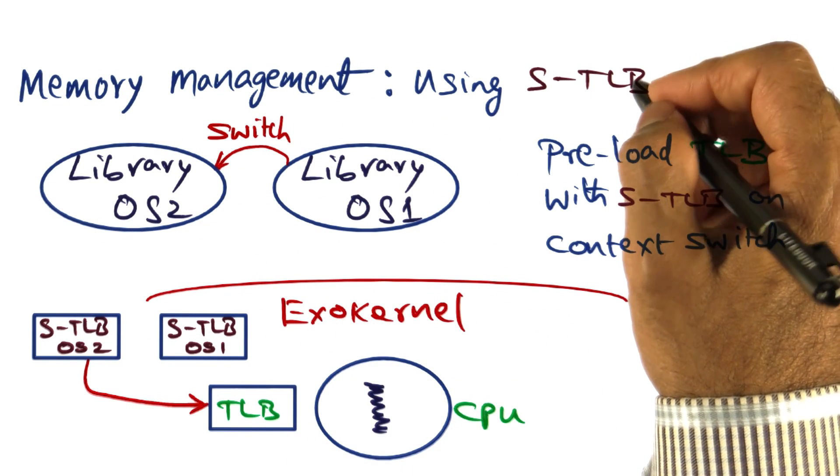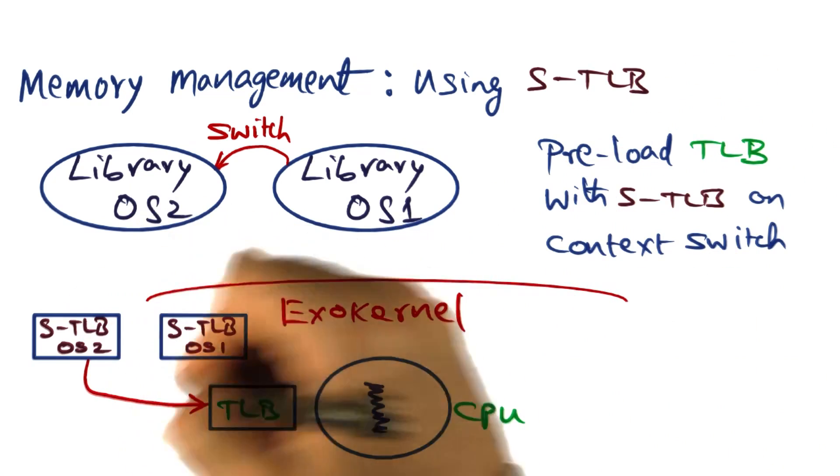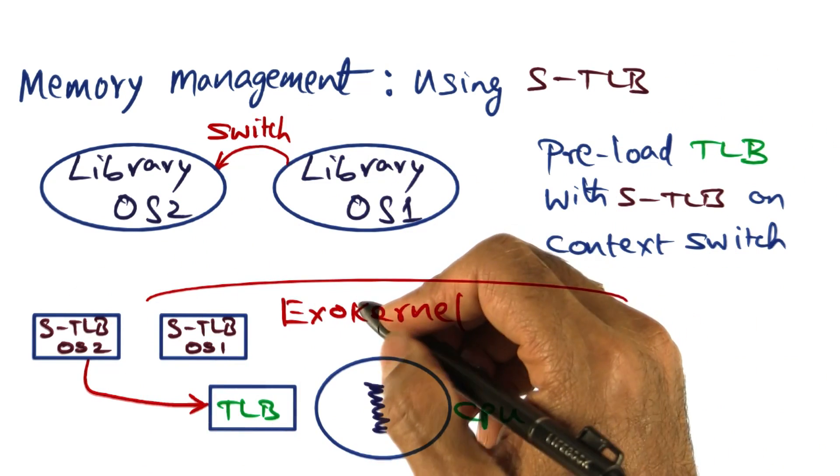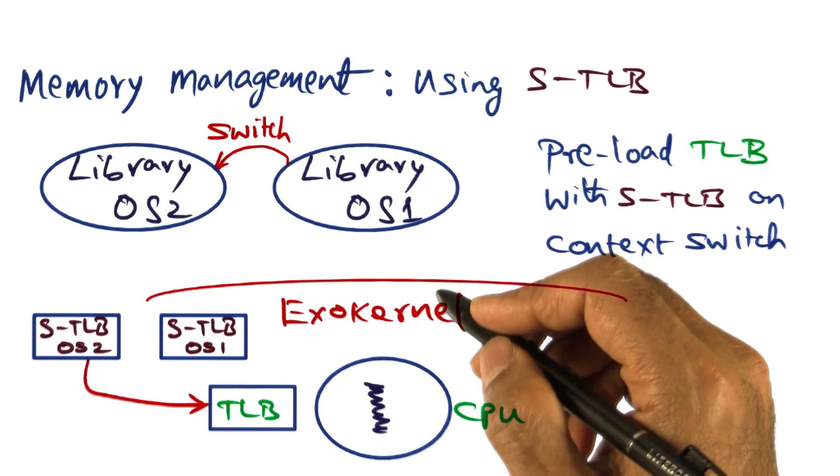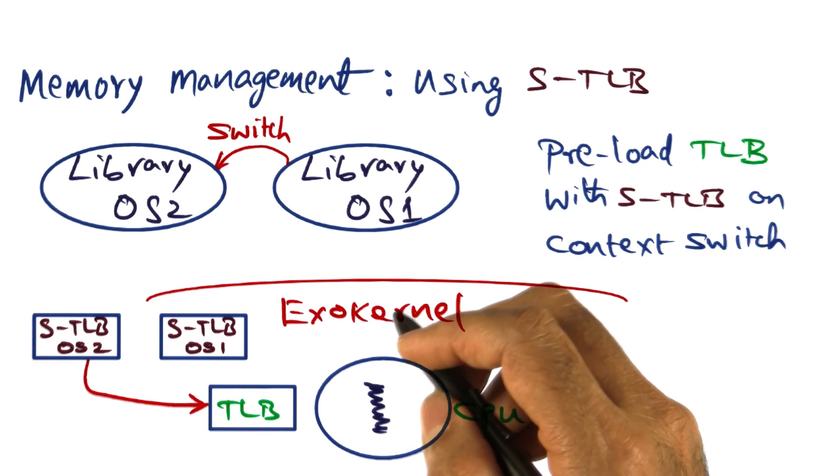That's the idea in exokernel of having the STLB data structure associated with every library operating system to mitigate the loss of locality that happens when we do a context switch in terms of address translations.